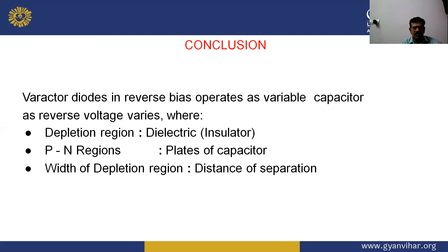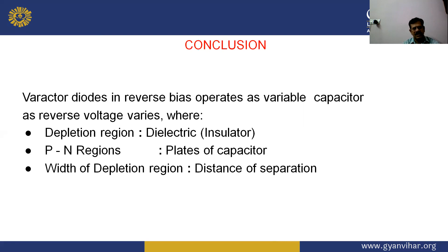In conclusion, the Varactor diode in reverse bias operates as a variable capacitor as the reverse voltage is changed. The depletion region acts as an insulator or dielectric, the P and N regions act as the capacitor plates, and the width of the depletion region — the plate separation distance — depends on the applied reverse voltage.